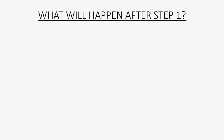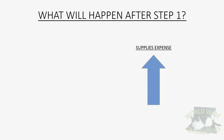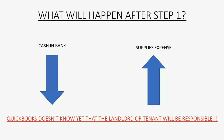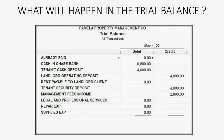And then you must type the reason in the memo field. After step one, supplies expense will go up because QuickBooks thinks that it's our supplies expense, and cash in bank will go down because we just paid property-related expenses. QuickBooks doesn't know yet that the landlord or tenant will be responsible. In the trial balance after step one, cash in bank will decrease to $6,450, and supplies expense will increase to $350.